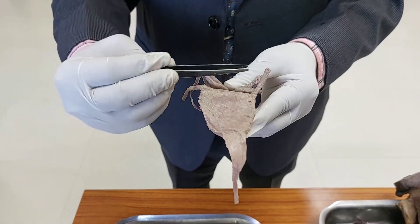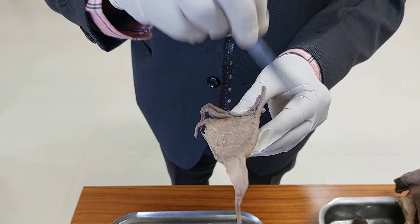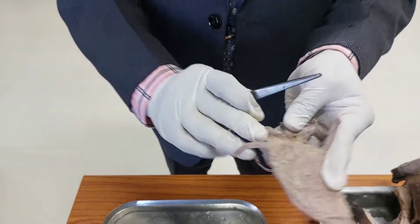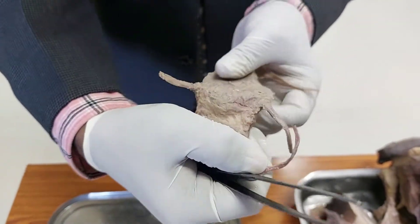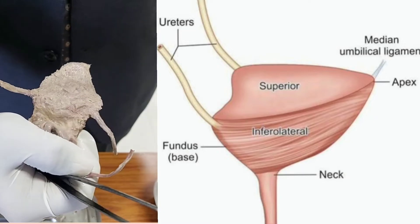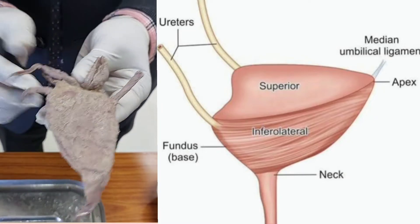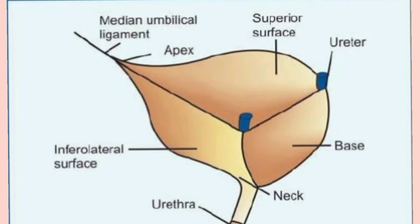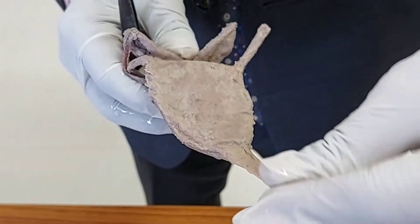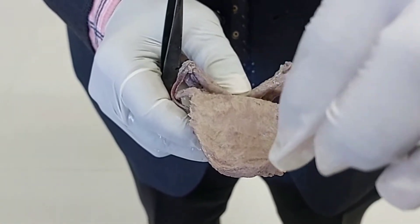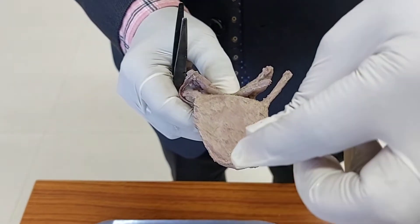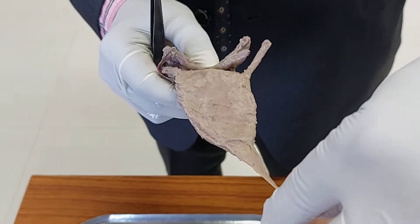The four borders are: the anterior border, two lateral borders, and one posterior border. The four surfaces are: the superior surface (which is concave), two inferolateral surfaces (right and left), and behind the posterior border is the base — also called the posterior surface or fundus of the urinary bladder. Opposite to the base is the apex. From the apex, a ligament extends to the umbilicus; embryologically this was the urachus, and its remnant is called the median umbilical ligament, which is covered by a fold of peritoneum called the median umbilical fold.